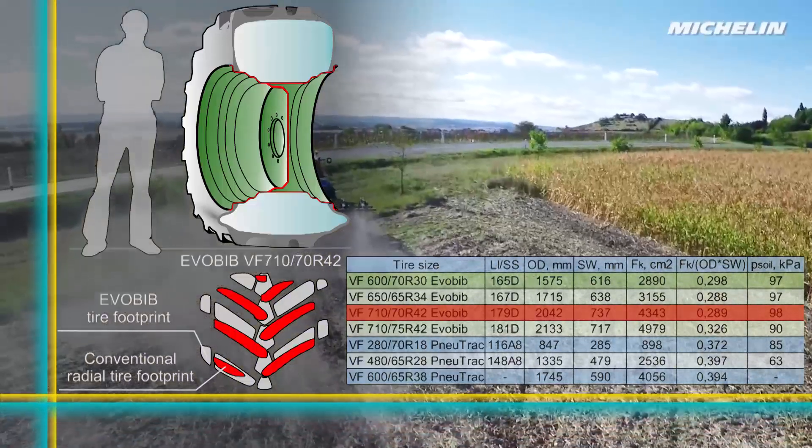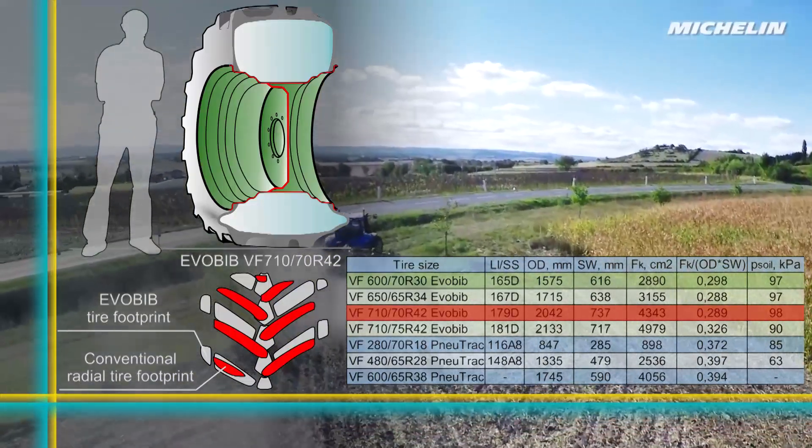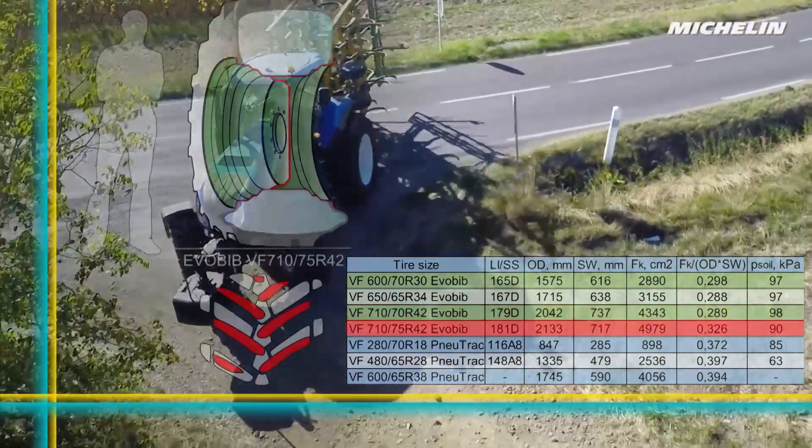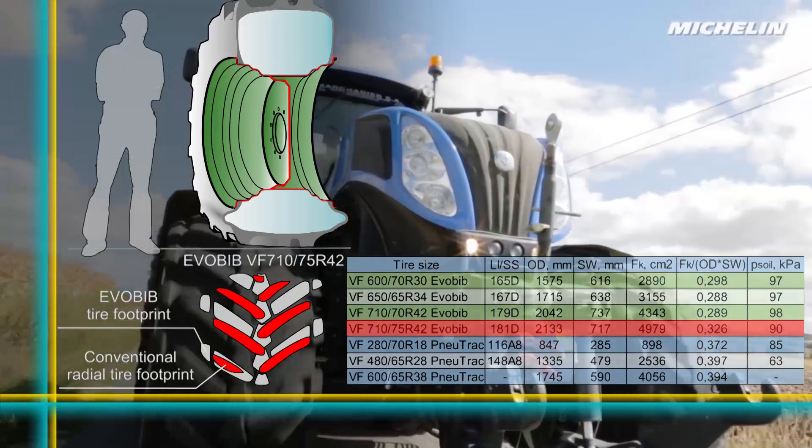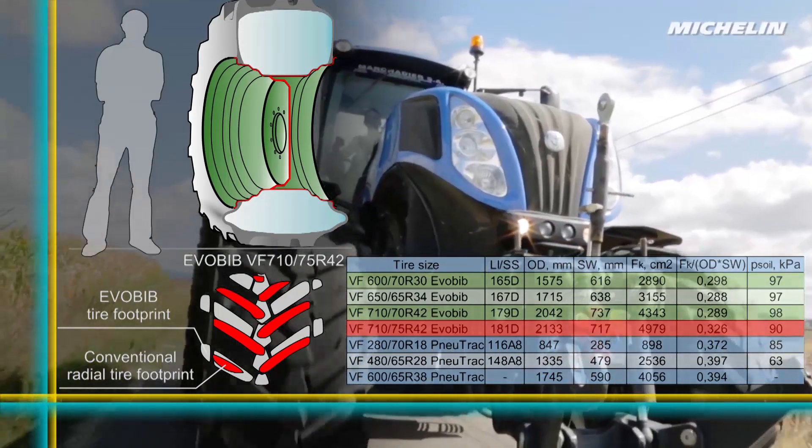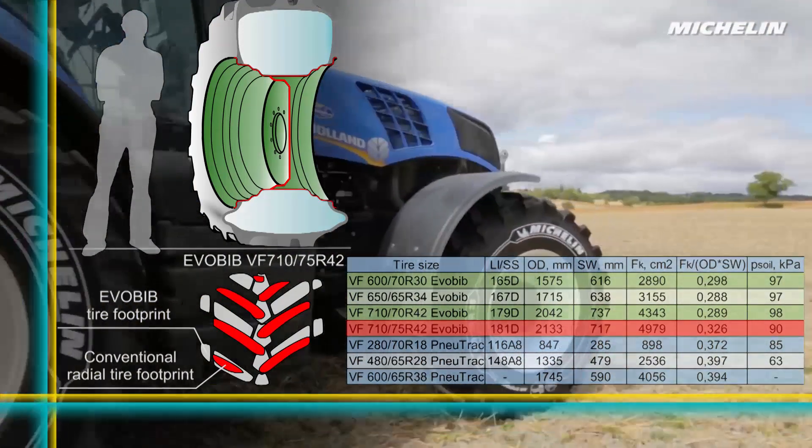Michelin's new Evobub tire is designed for high horsepower tractors. It's designed to work more efficiently both on the road and in the field. It's a good match for the onboard central inflation system some tractors and at least one retrofit product now offer.